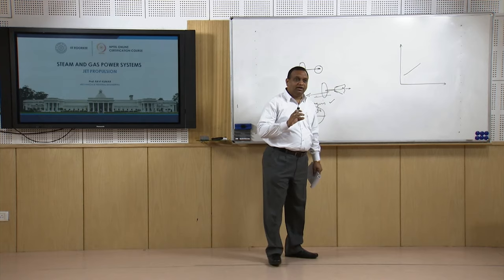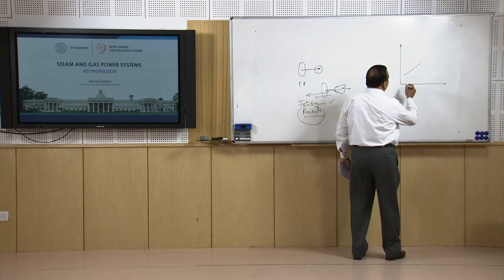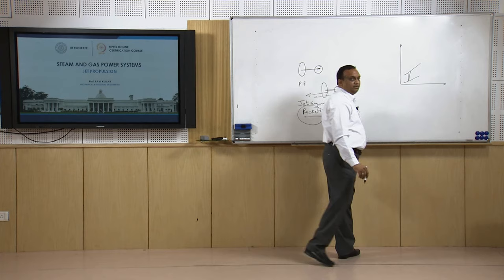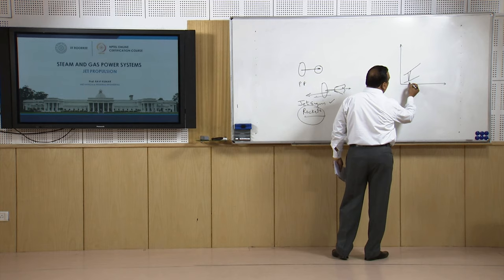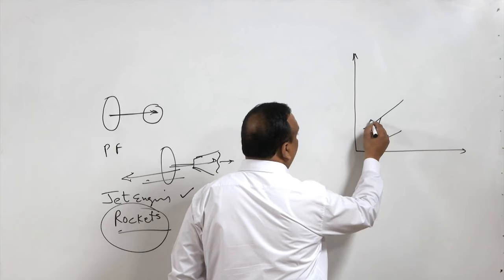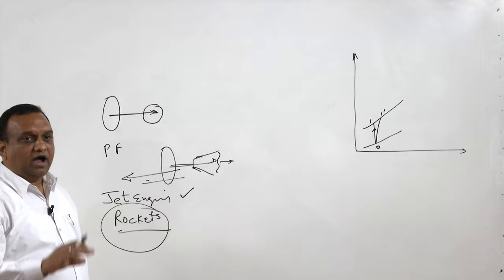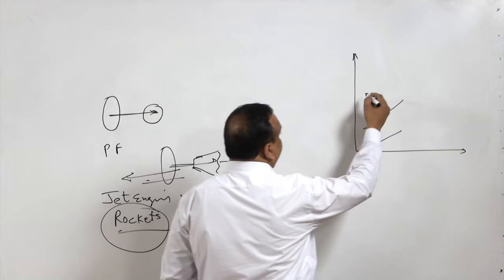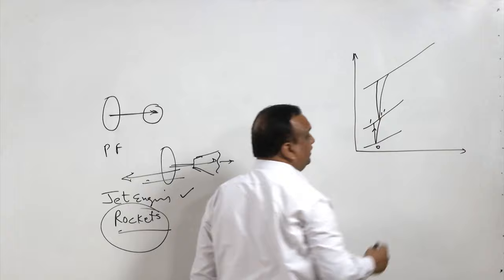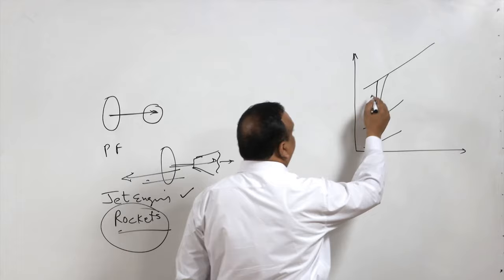In a jet engine, the body itself is moving at very high velocity, so there is a diffuser fixed in the engine. Atmospheric air at condition O enters the diffuser, where pressure is increased to state 1; due to diffuser inefficiency, state 1-dash is actually attained. After the diffuser, there is a compressor — normally an axial flow compressor — where further pressure rise takes place from state 2 to state 2-dash.